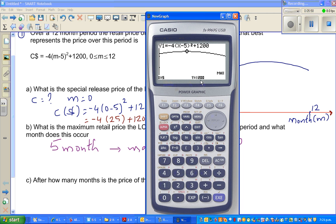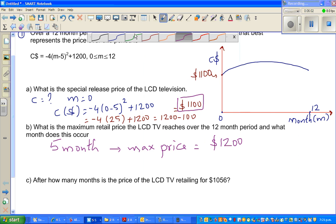So graphically, what does that mean? This means this is the 12th month. So somewhere, this is not drawn to scale, the 5th month, somewhere here, you reach the maximum price of $1200.